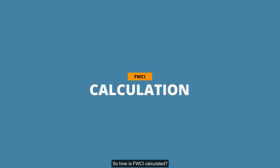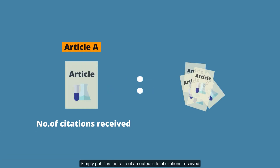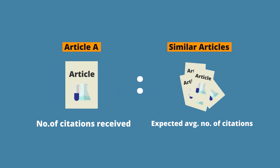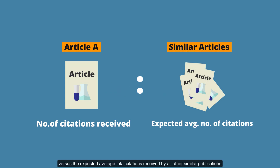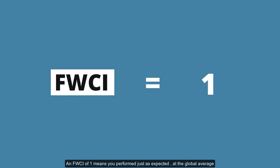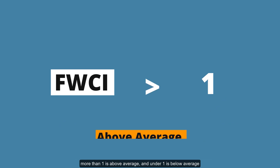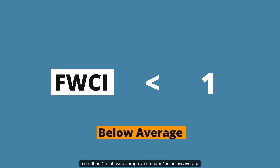So how is FWCI calculated? Simply put, it's the ratio of an output's total citations received versus the expected average total citations received by all similar publications. An FWCI of 1 means you performed just as expected at the global average. More than 1 is above average, and under 1 is below average.